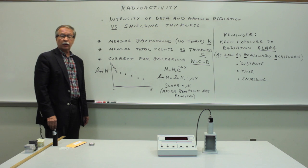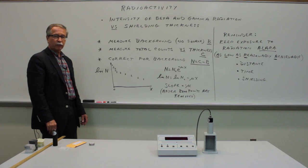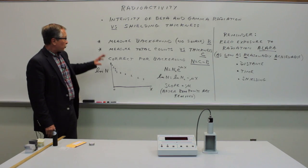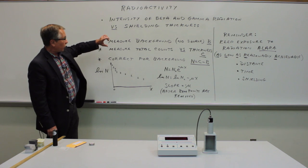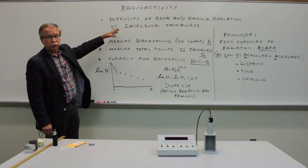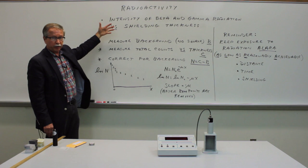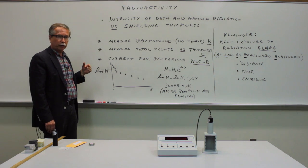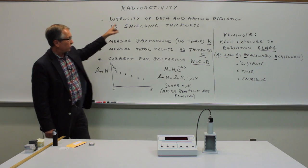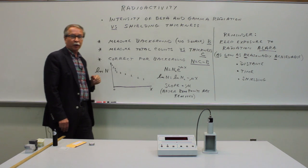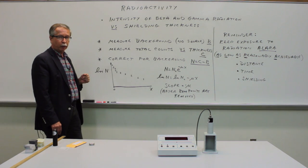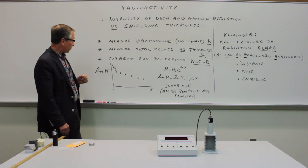Welcome back to Experimental Physics and our series of experiments involving radioactivity. This experiment is aimed at discovering how much material is required to completely block the beta particles from a radioactive source, and at the same time you'll be able to get the scattering probability for gamma rays in the material.